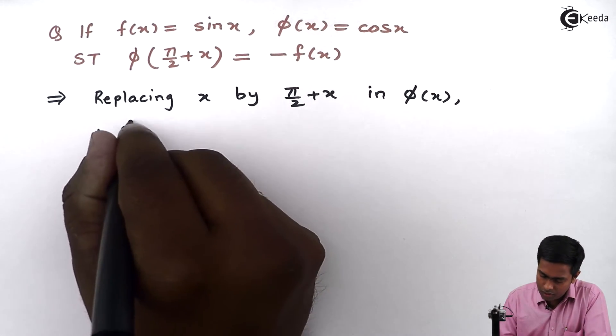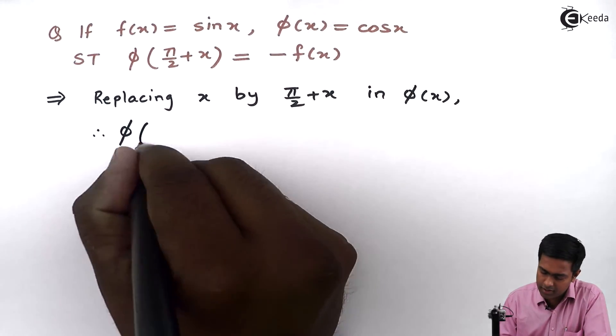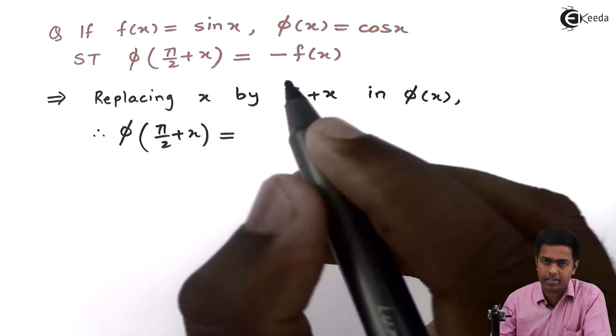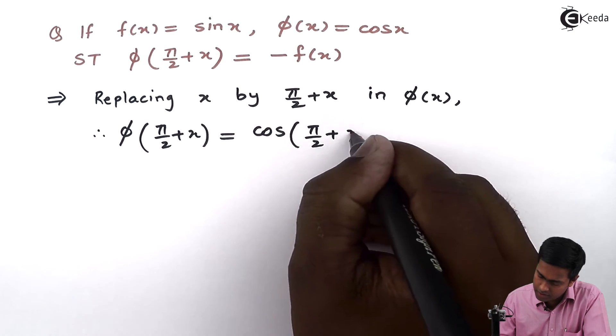So therefore, by replacing x with π/2 + x, that bracket will become π/2 + x, and on the right-hand side we will get cos(π/2 + x).